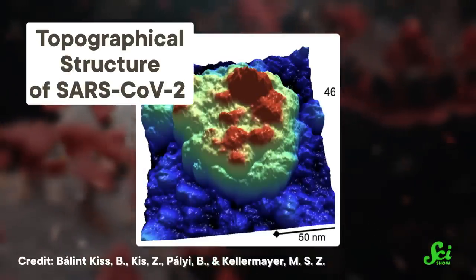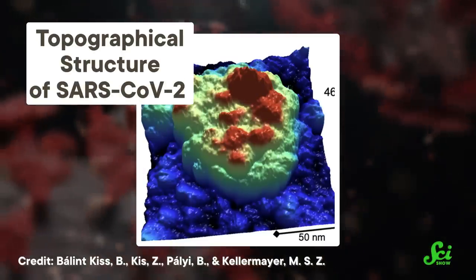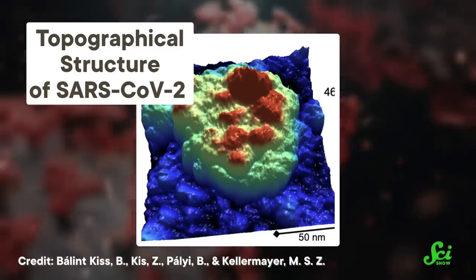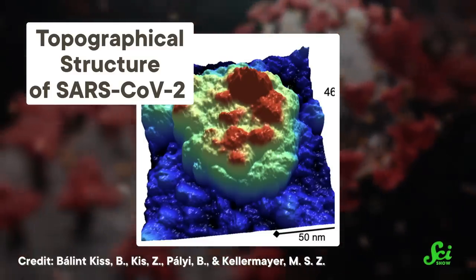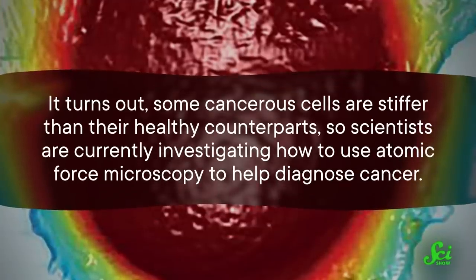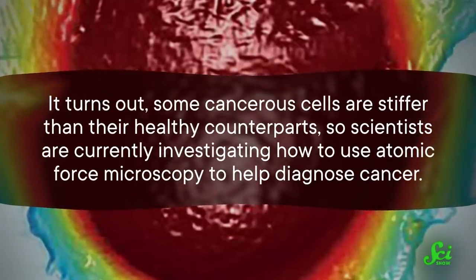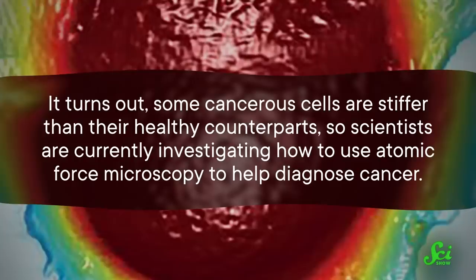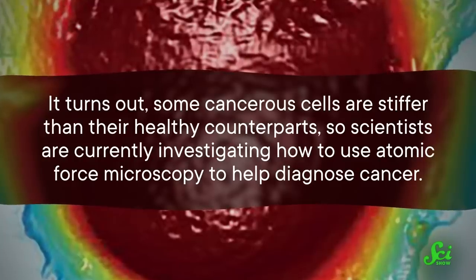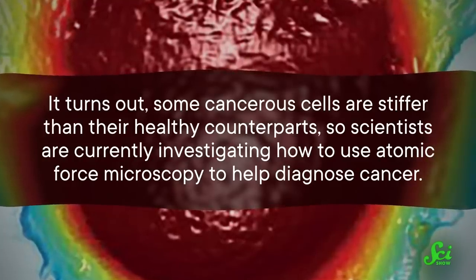By tracking all of this pushing and pulling, and how those forces affect the probe's wiggling, scientists can figure out where the tip runs into any grooves or bumps. That builds a 3D map of a sample down to the atomic level. And if you use the right kind of probe, AFMs can do more than map. They can also measure the mechanical properties of your sample, like surface friction or stiffness. It turns out some cancerous cells are stiffer than their healthy counterparts, so scientists are currently investigating how to use atomic force microscopy to help diagnose cancer, which is pretty sweet.